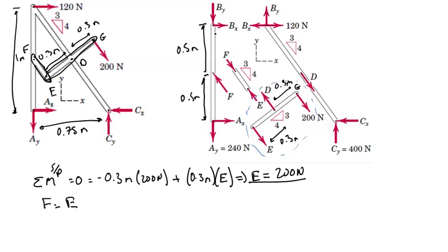Now we can investigate member BFA in order to find Ax. Let's call system 2 member BFA. In order to solve for Ax we can simply take a moment about B and solve for Ax without having to find the reactions at pin B.